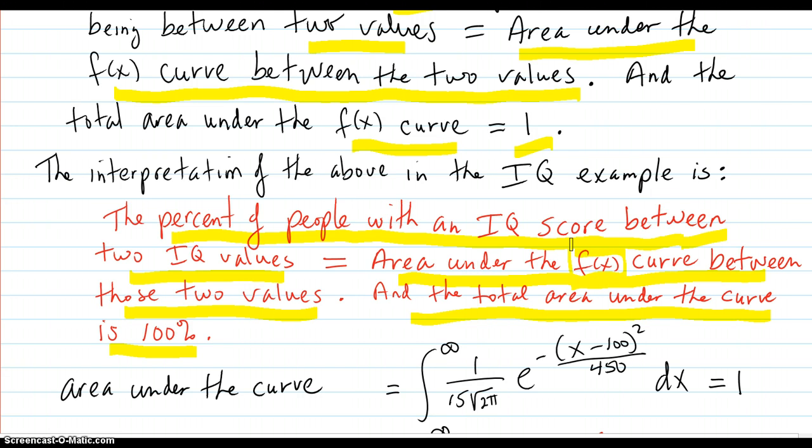Also, IQs are nicely bell-shaped with a lot of people in the center. And it's hard to get a high IQ as you go out to the right and hard to have an IQ as you go out to the left.